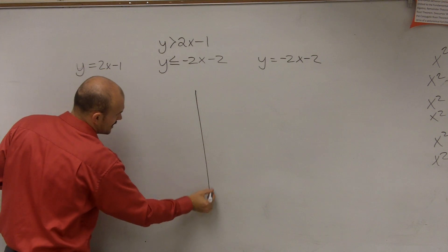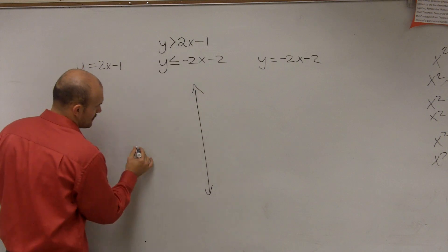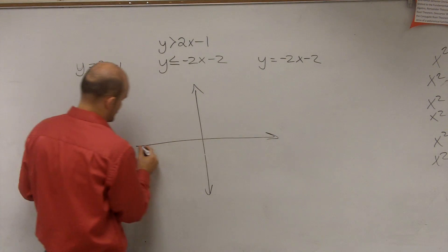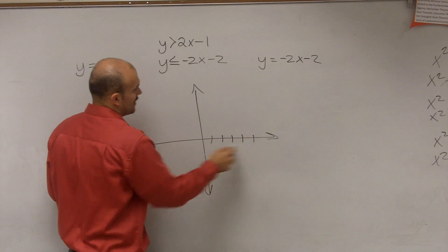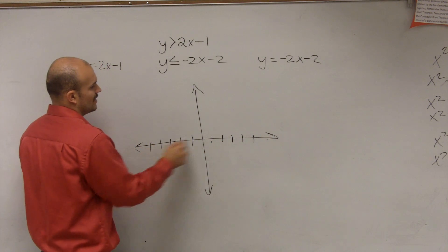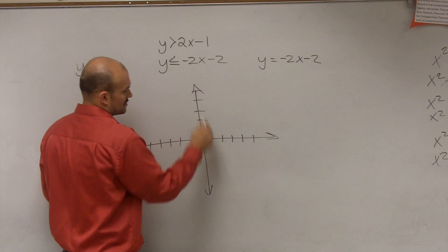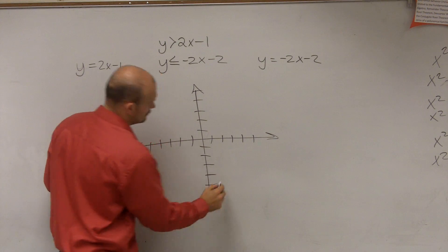So the first thing is we have a y and an x-axis. So 1, 2, 3, 4, 5. 1, 2, 3, 4, 5. So there's my scale.